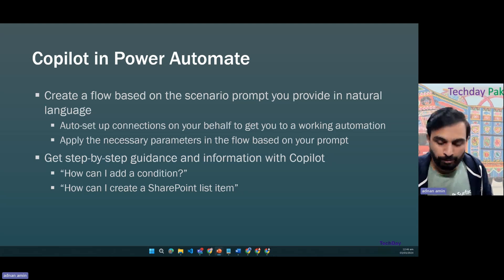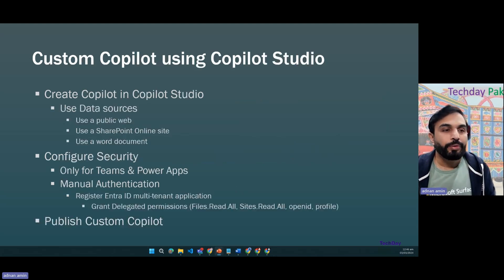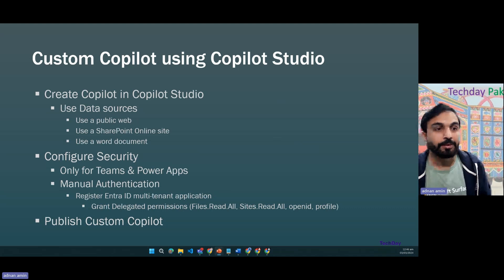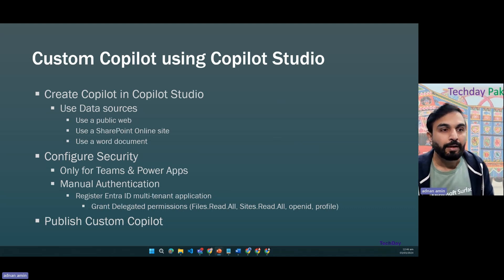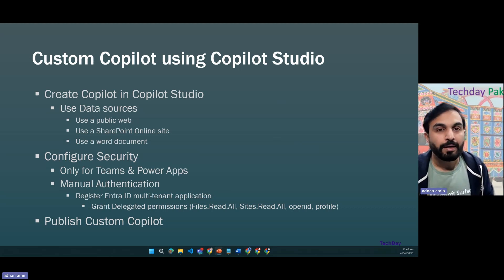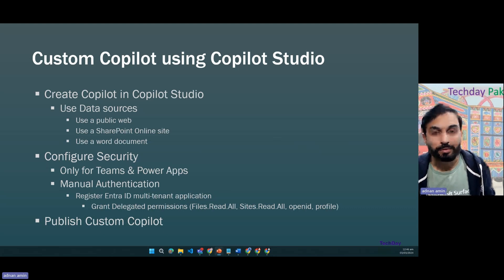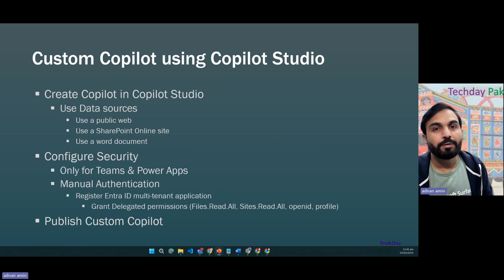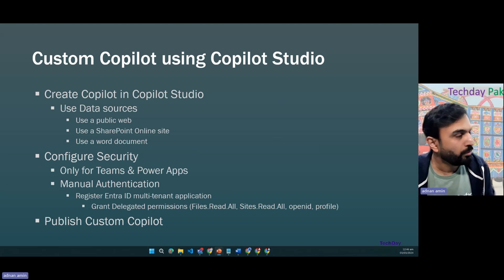We've seen how Copilot works in Power Automate, model-driven apps, Microsoft 365, and SharePoint. If you need to create your own custom Copilot, it can search information from a public site, a SharePoint site, or uploaded documents. With the power of generative AI, it will generate information for you, and you can deploy it on Teams. You need to define authentication when using a SharePoint site so users can only fetch information assigned to them.